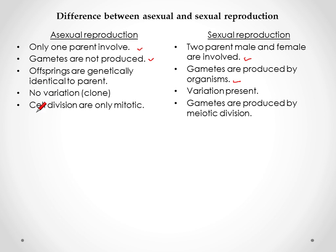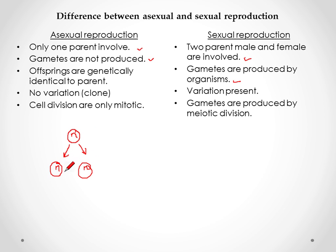In asexual reproduction, cell division is by mitosis only, whereas cell division in sexual reproduction is meiotic. As seen in this diagram, if n number of chromosomes are present in an organism undergoing asexual reproduction, they will give an equal number of chromosomes to their offspring. That is why the offspring will be identical to the parent species and identical to each other.